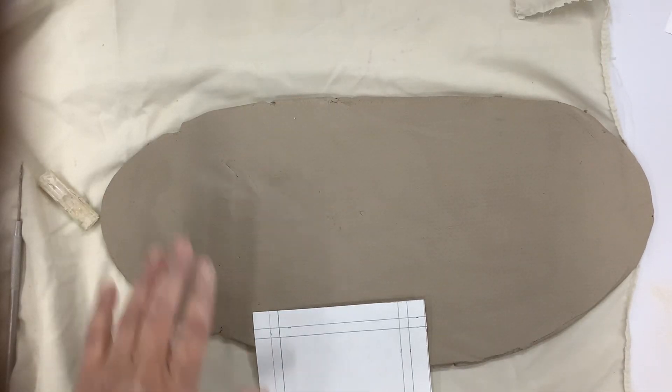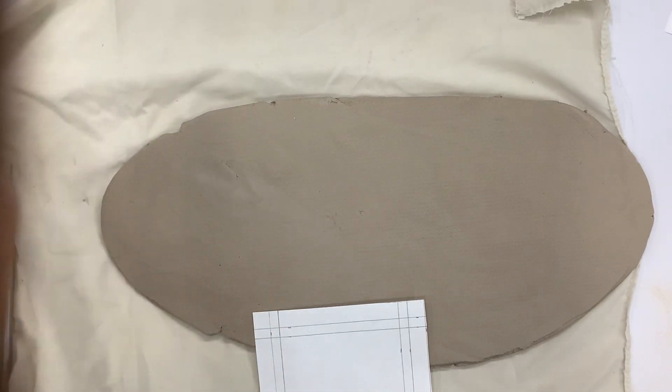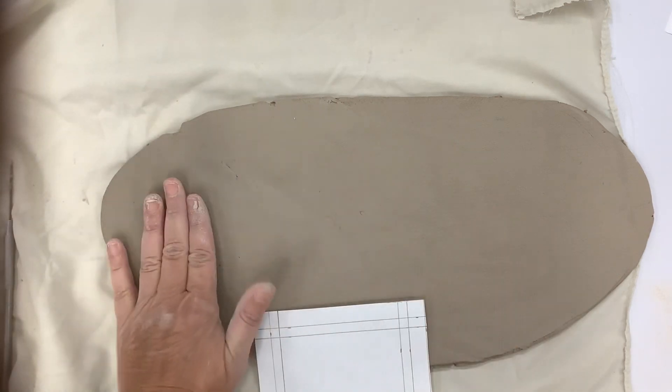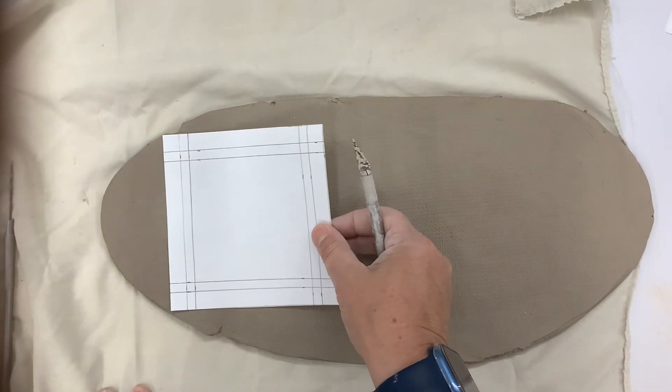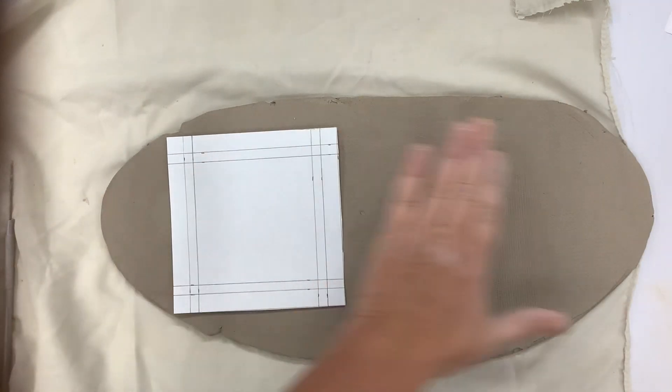Now I'm going to use my stencil to cut out my slab case. I rolled out a slab just like we've done for all of our other projects. I want to get as much out of this as I can - if I can get two or three out of this slab that'd be perfect.